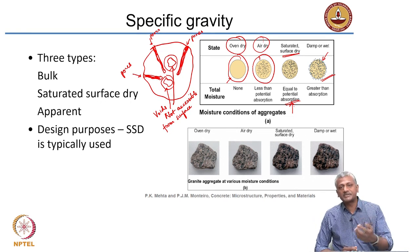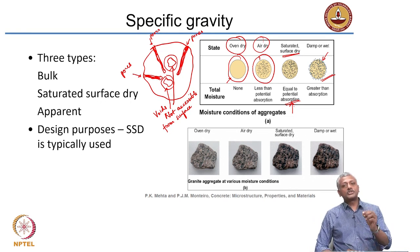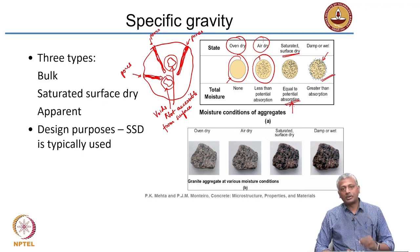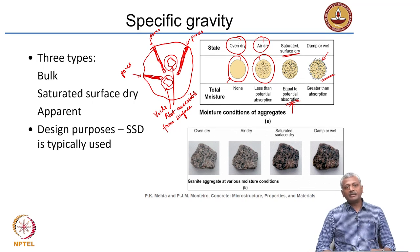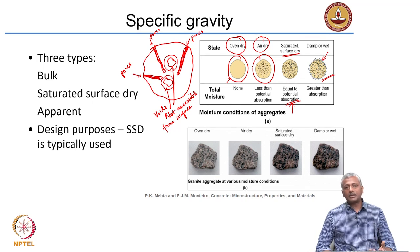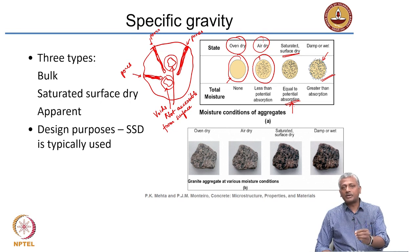That is why in concrete mix design, finding out the moisture state of the aggregate is very important. This is something we do in the lab on a regular basis, but in the field, at the site when they are actually producing concrete, this becomes one of the single most important aspects that governs the performance of the concrete.